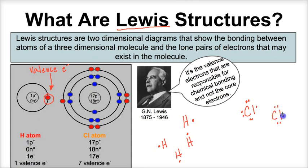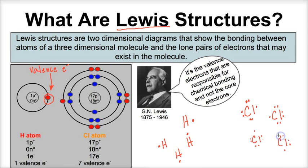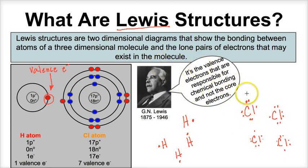Any of these rotated arrangements is acceptable. The key concept with a Lewis dot diagram or Lewis structure is that we're looking at the valence electrons and how those electrons bond with other atoms in a molecule. From that, we're able to determine the molecular shapes of different molecules and the bond angles as well.